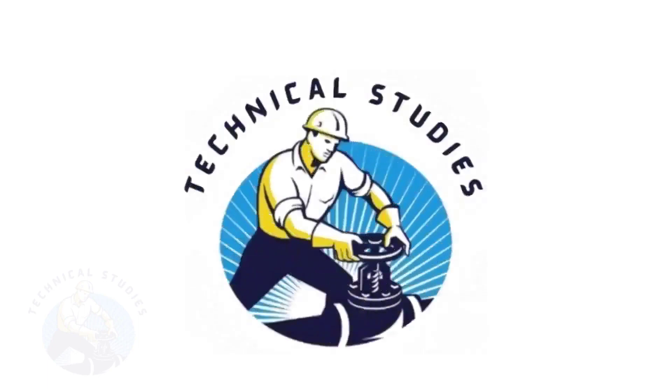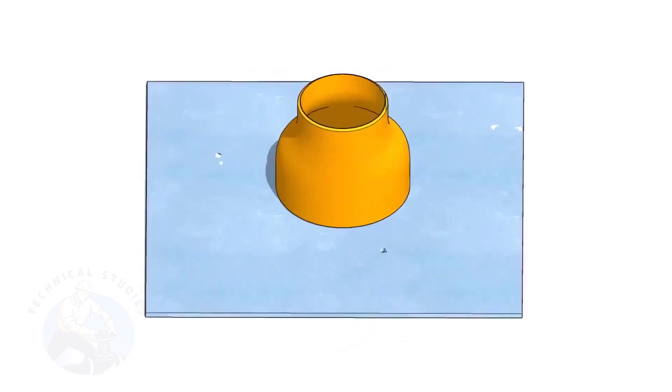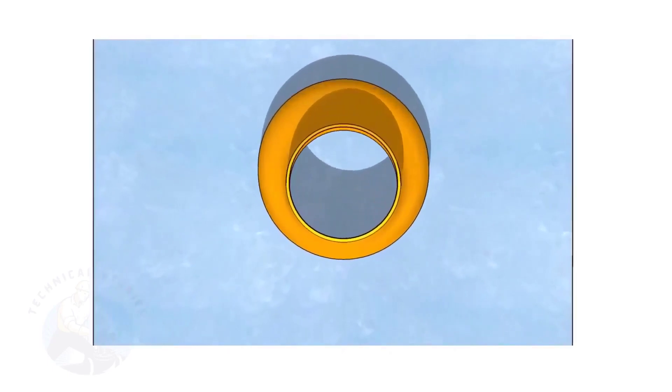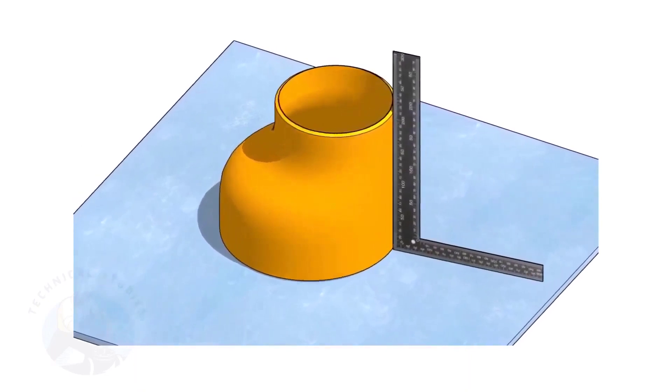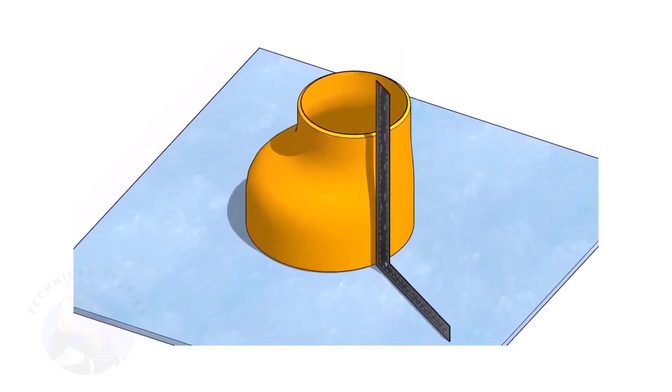Welcome to Technical Studies. Fitting an eccentric reducer to a pipe that is already fitted to another fitting like a flange, tee, elbow, etc. is a little tricky.